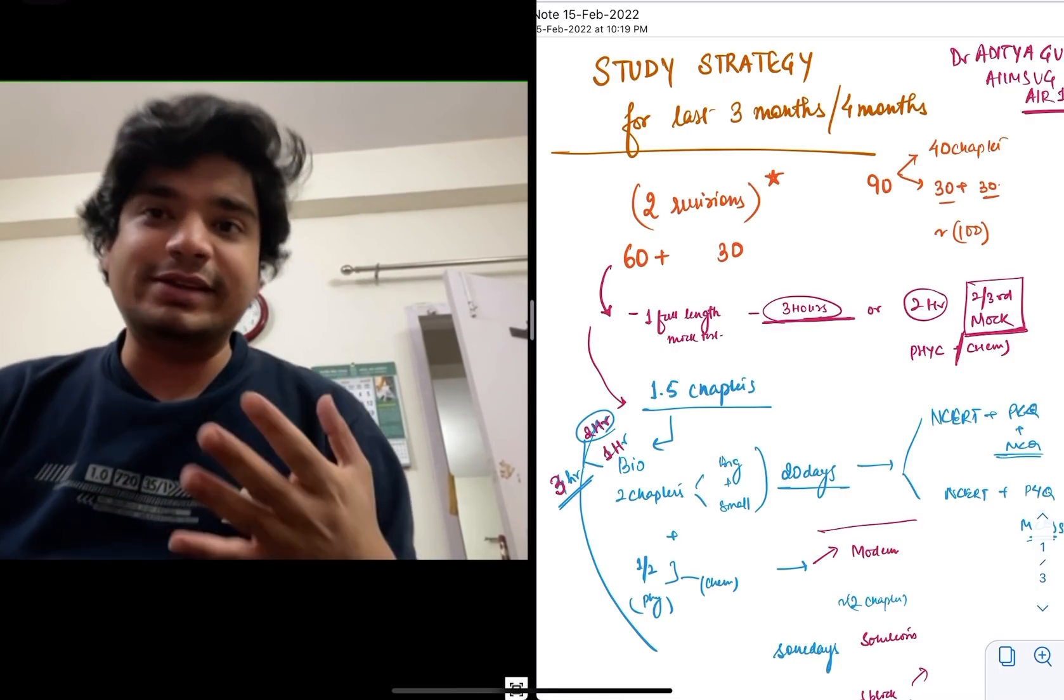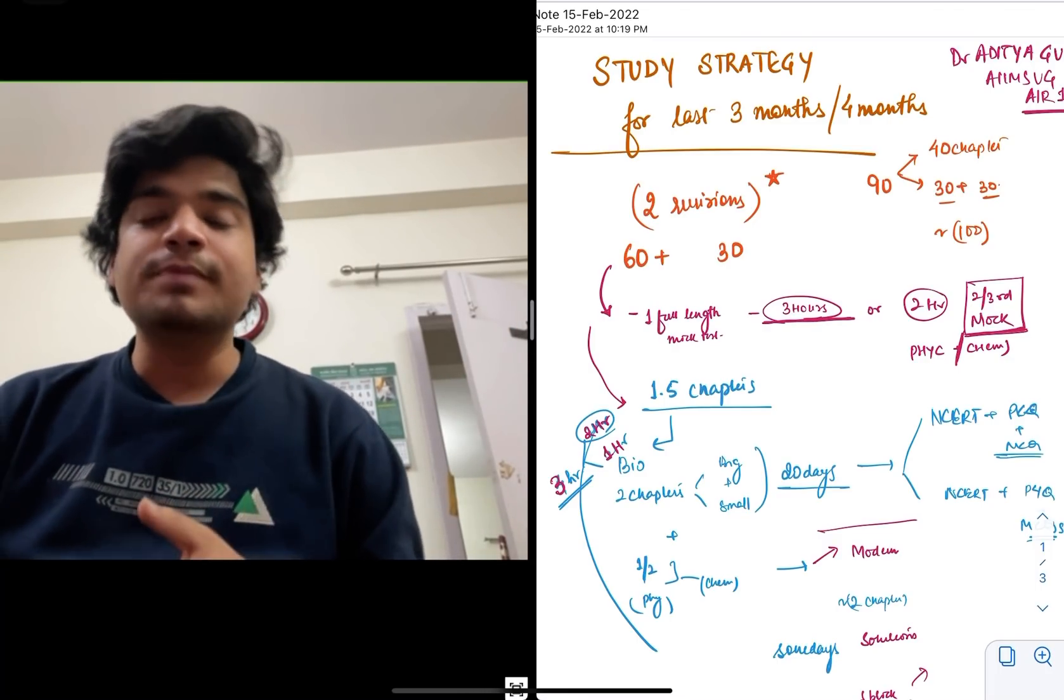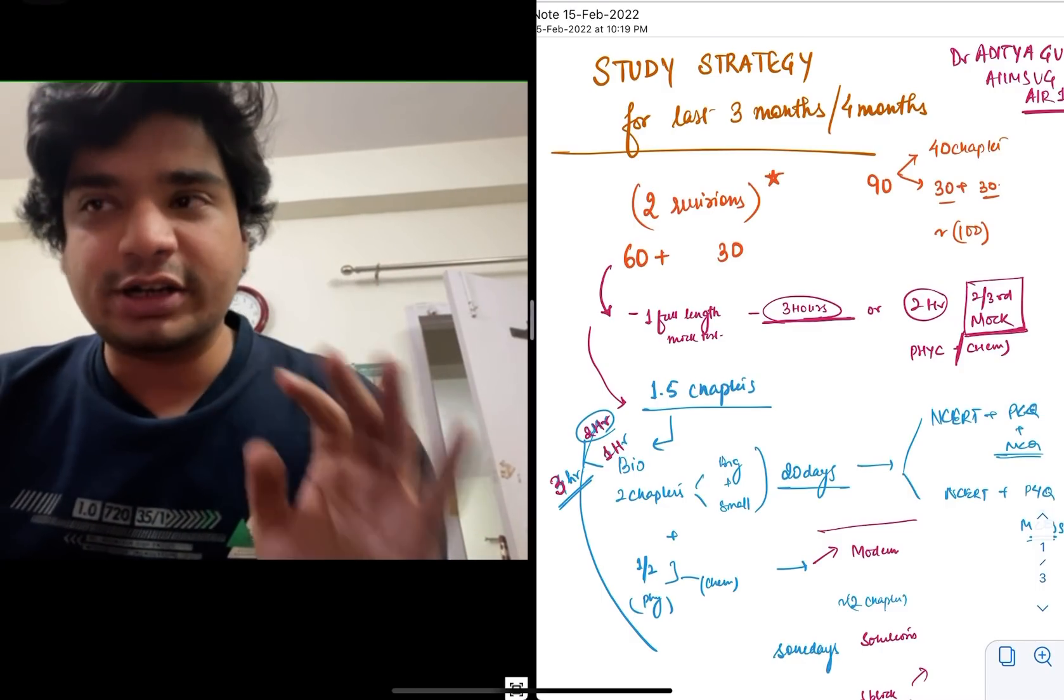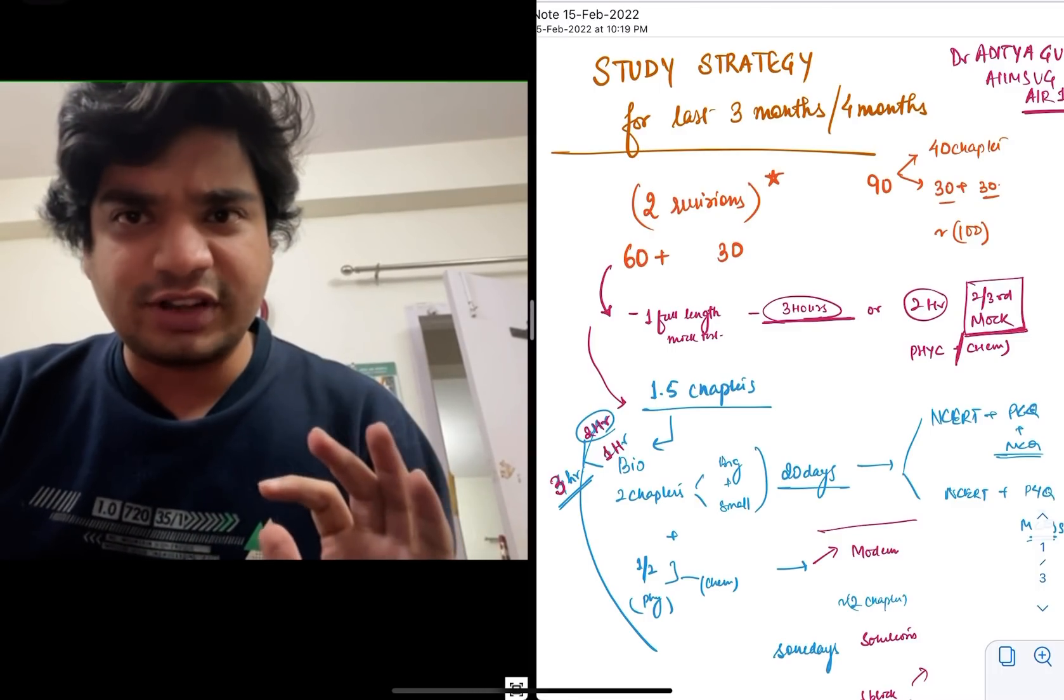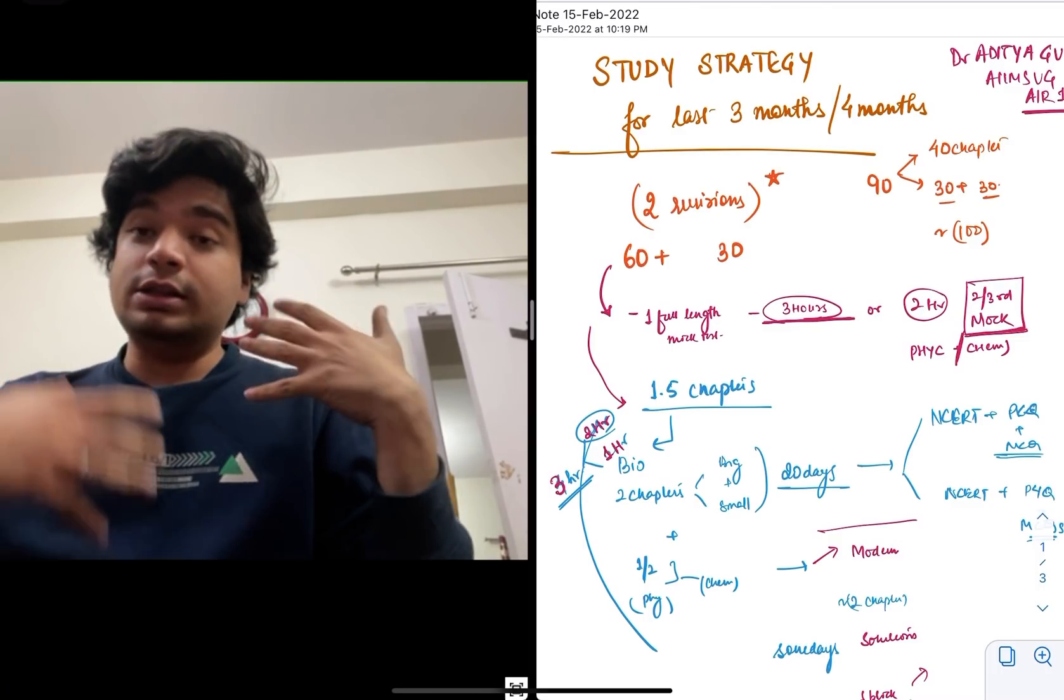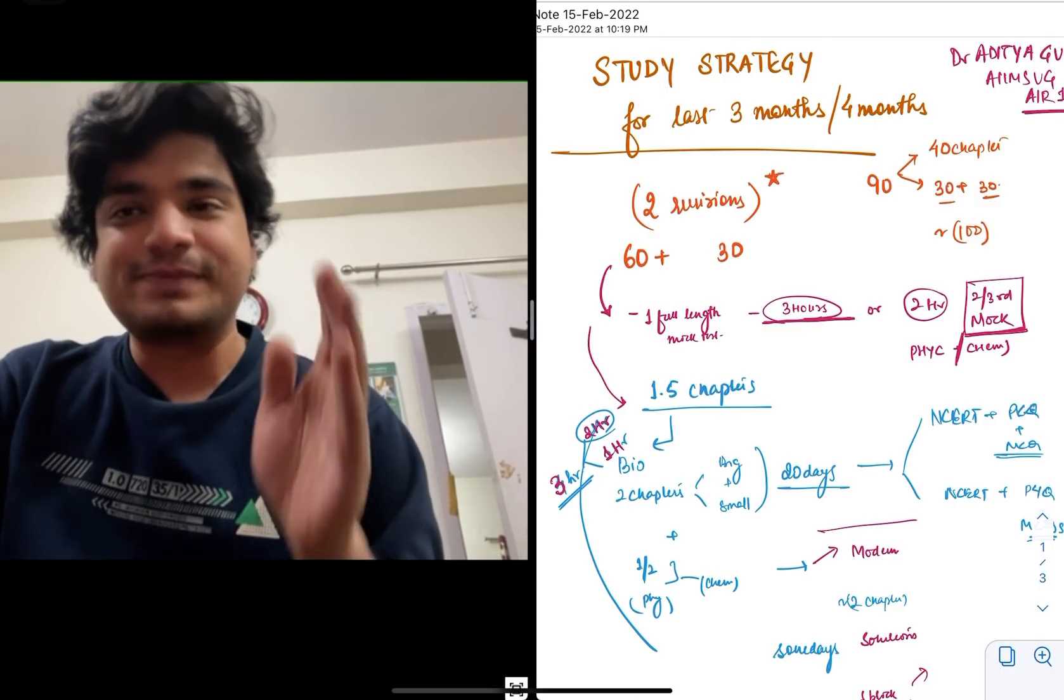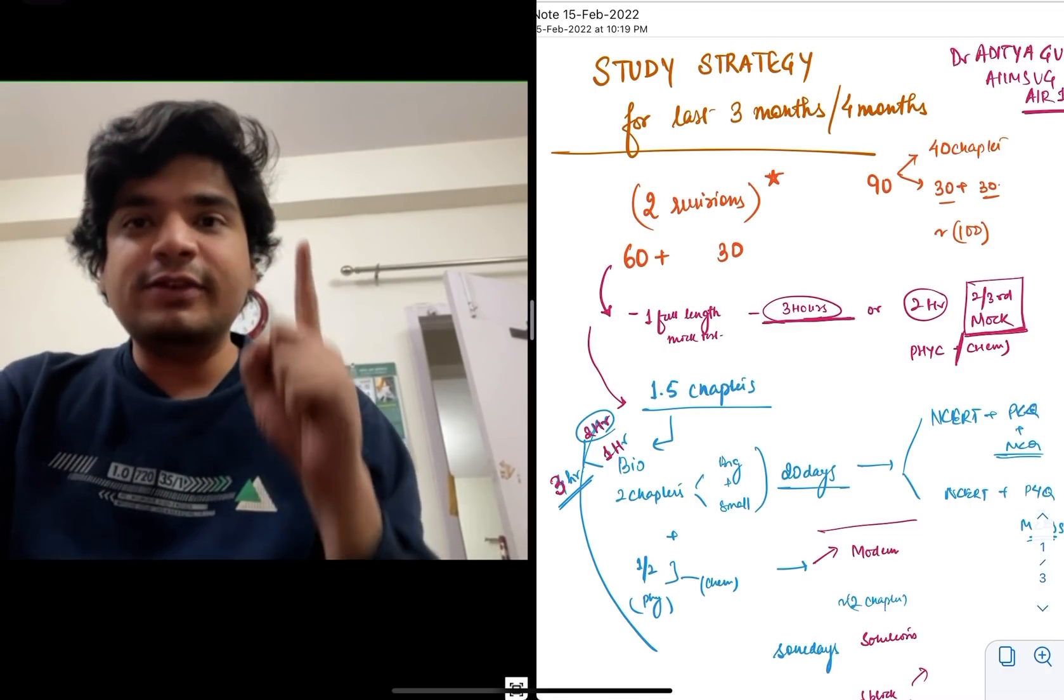Now, how do we go about revising the subjects - physics, biology, chemistry? So we have a total of around 100 chapters. There are 40 chapters in biology and 30 each in physics and chemistry. But the importance of biology is more - biology is 50% while physics and chemistry is just 25% each of the syllabus. Now, how do we go about this?